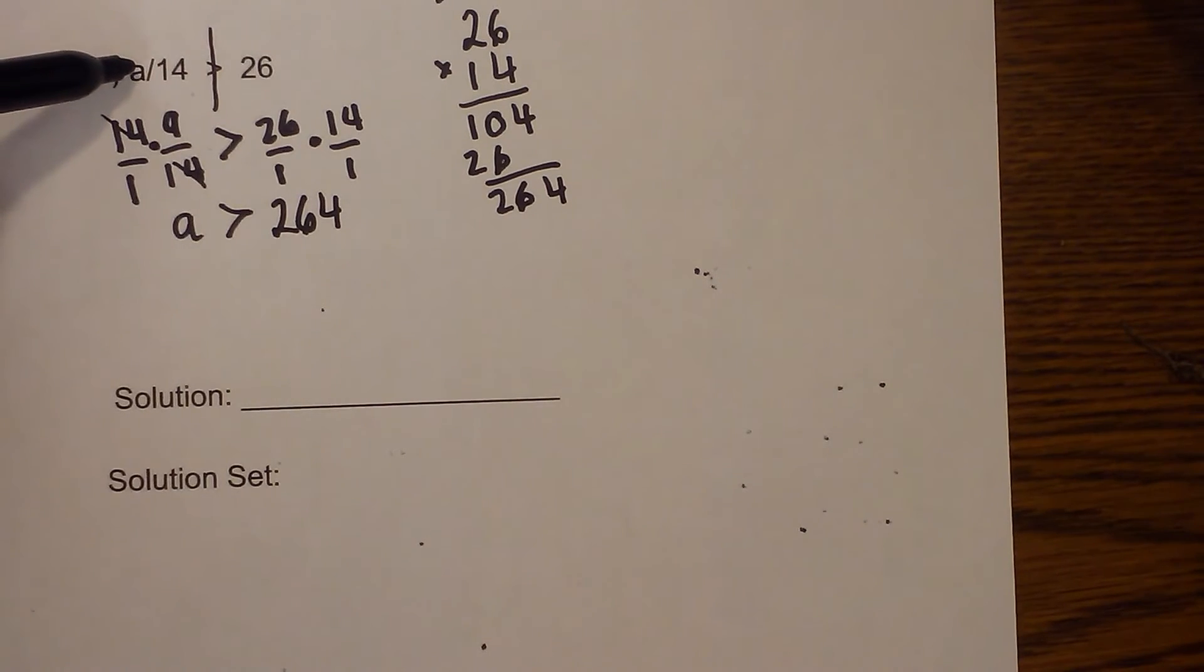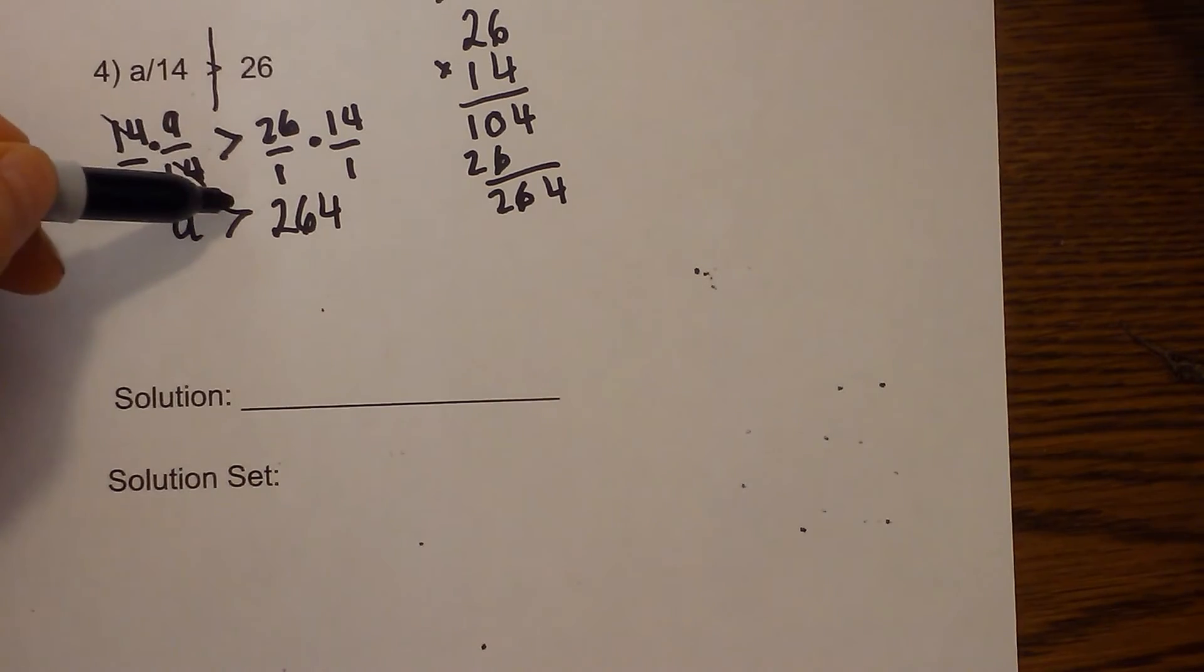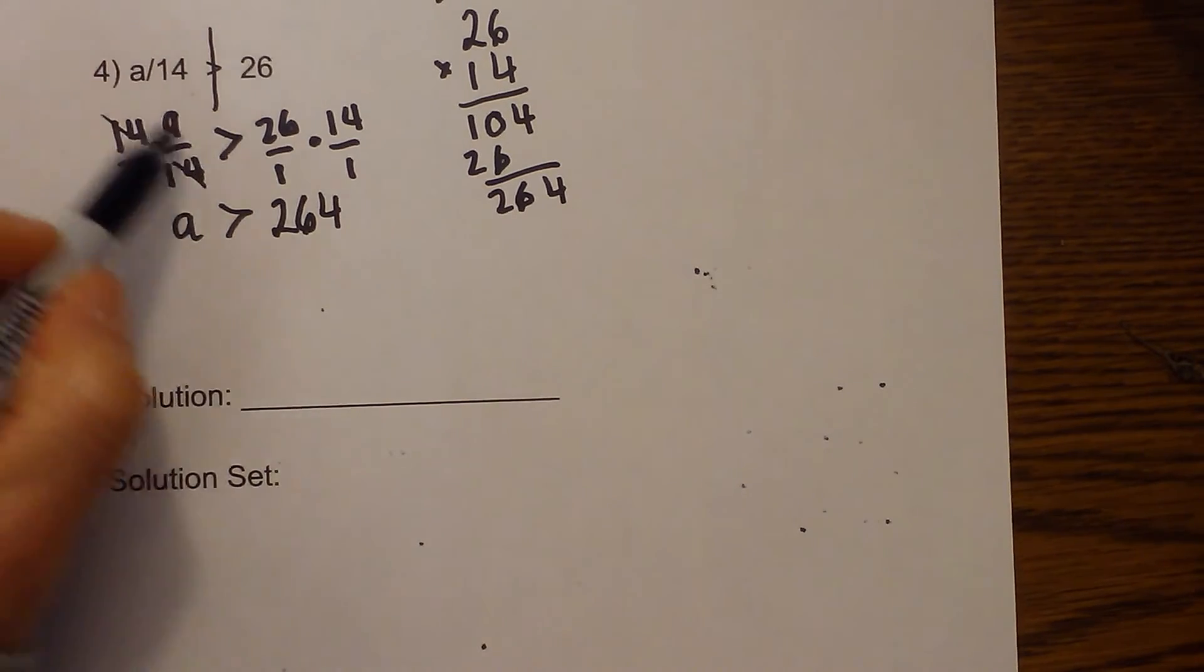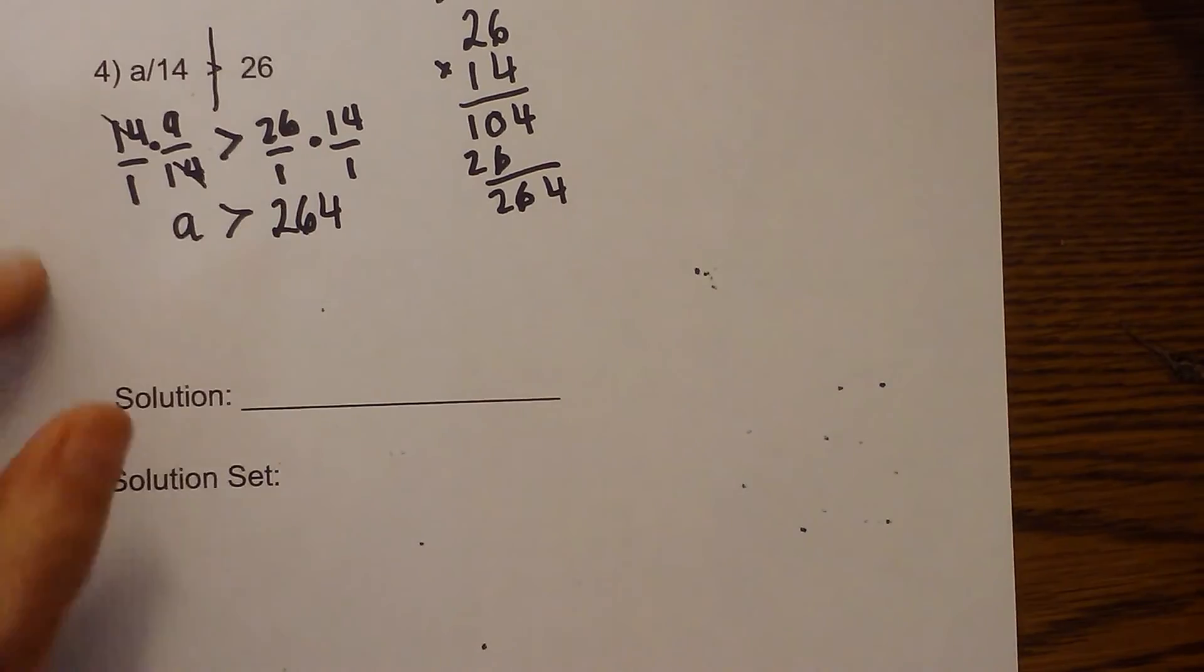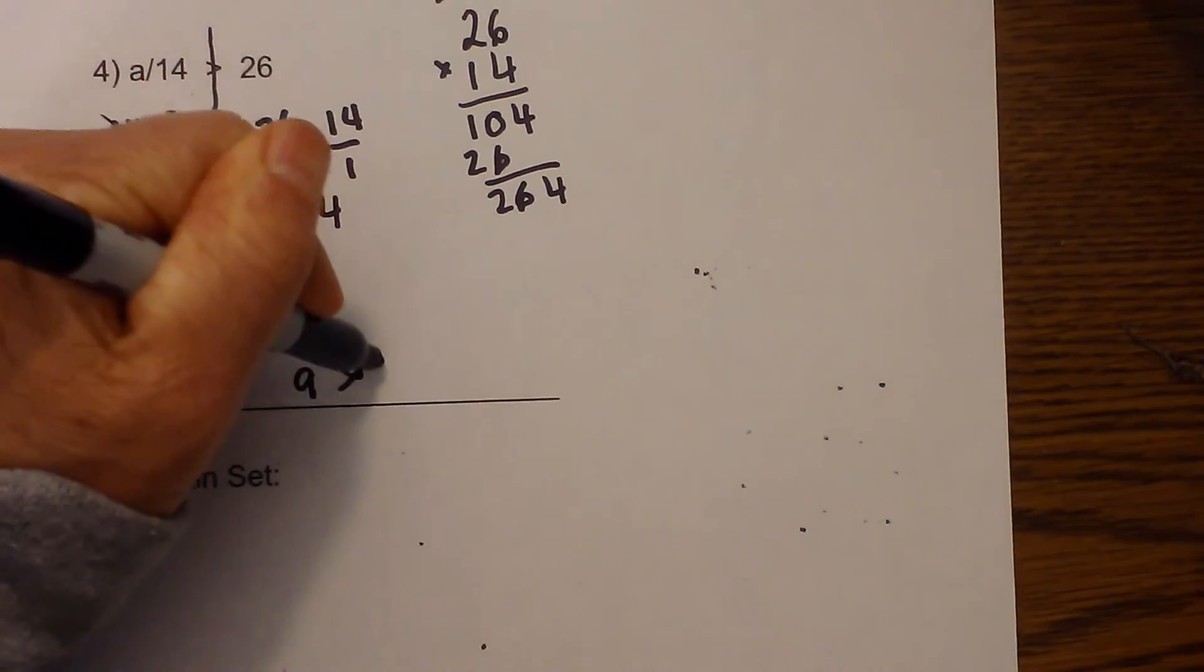Quick recap. The operation was division, so I use multiplication on both sides. And now I keep the sign the same because we do not have a negative involved. So here is the solution, greater than 264.